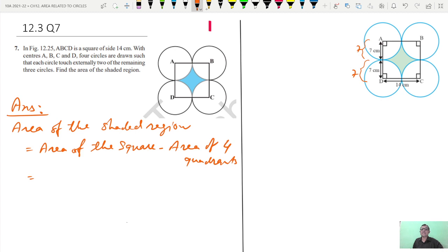What is the area of the square? 14 into 14 centimeter. Area of the 4 quadrants: 4 into 1 by 4 pi r square. Quadrant is, area of the quadrant is pi r square.